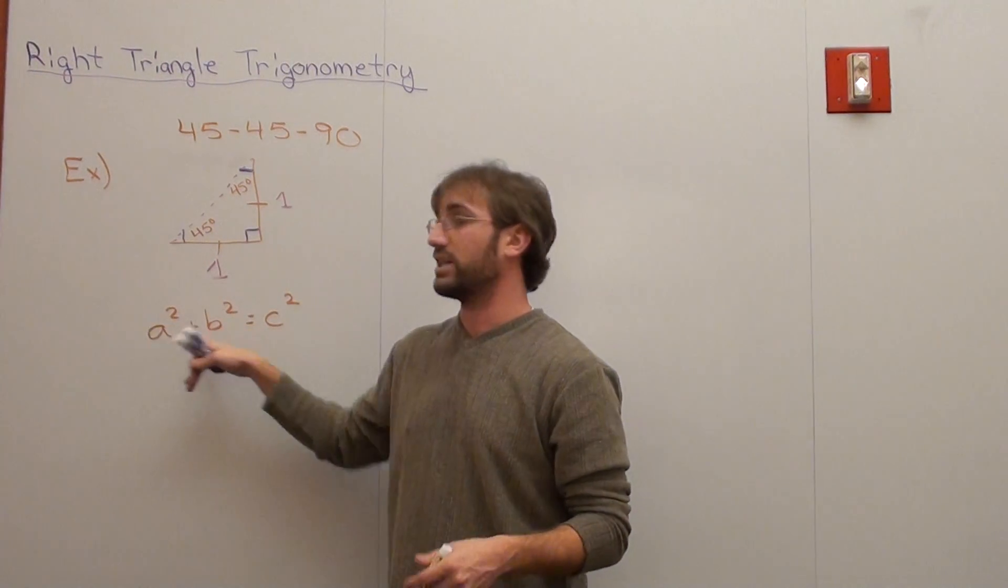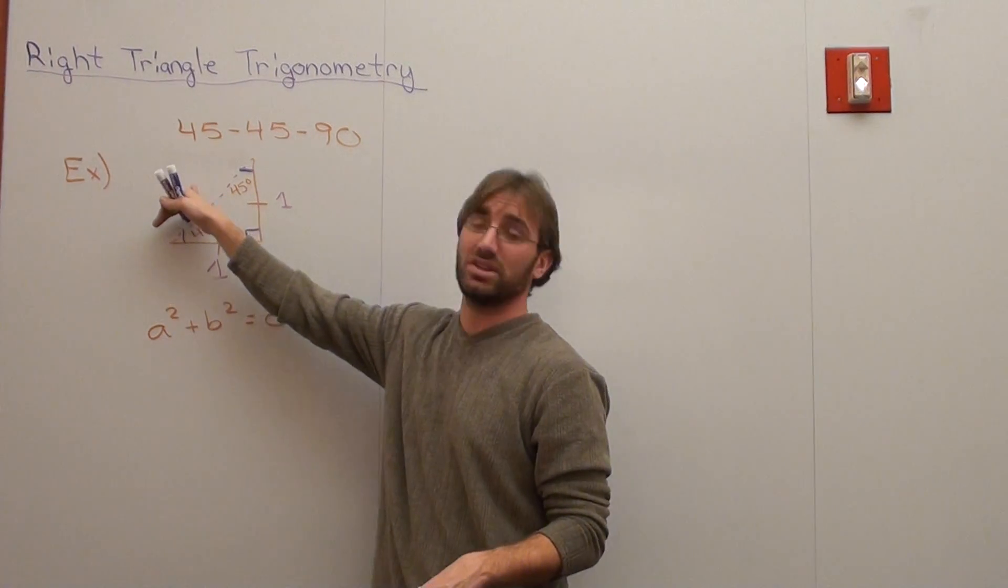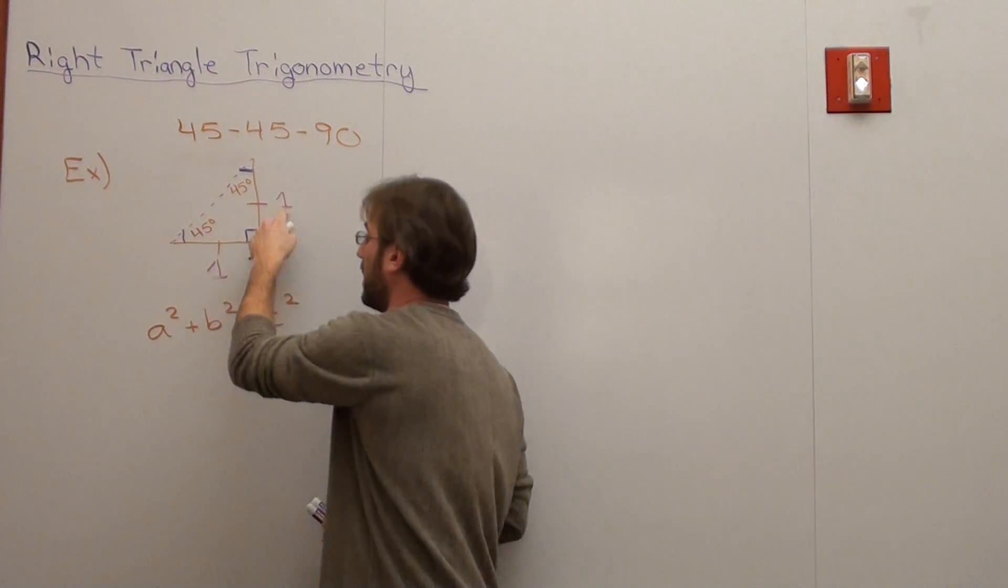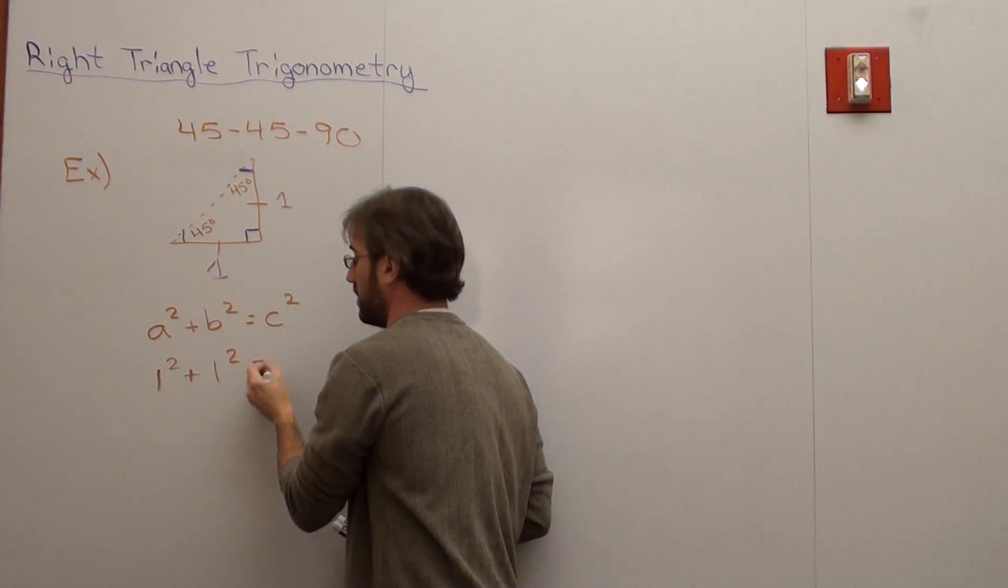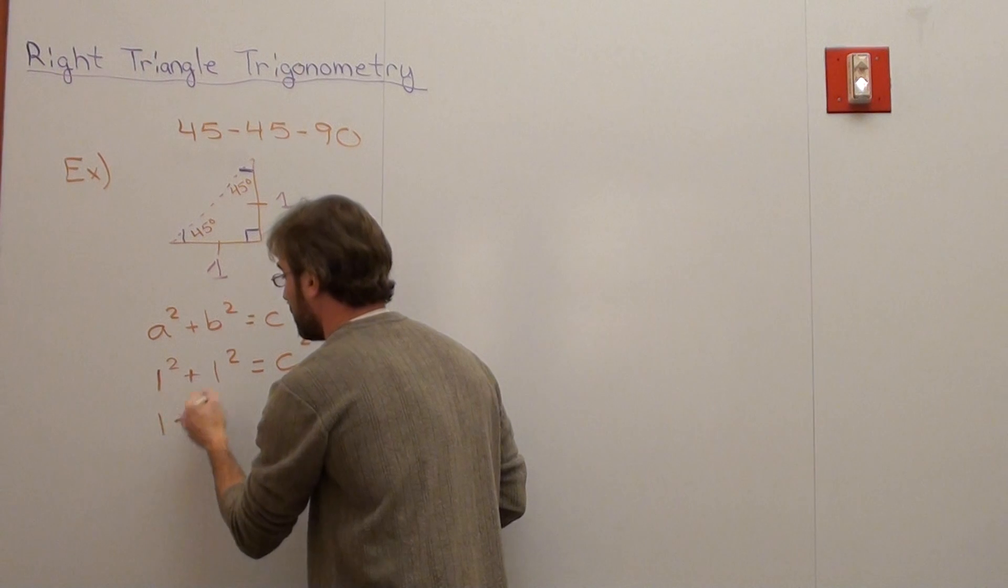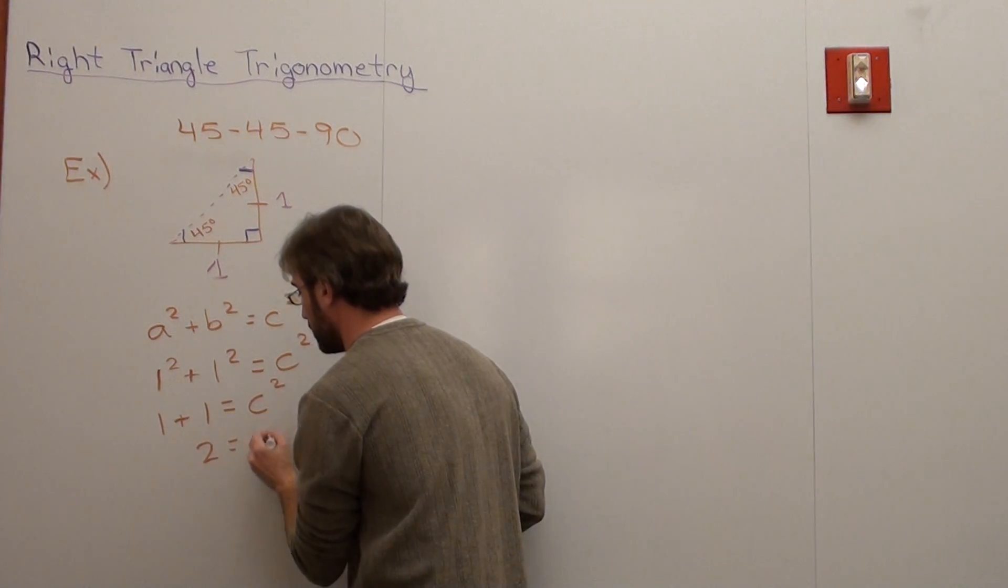So the two smaller sides are a and b, and it doesn't really matter which one you put in, but the c has to be the longest side. The side opposite the 90 degree problem. So we do that. 1 squared plus 1 squared equals c squared. 1 squared is 1 plus 1 squared is 1 equals c squared. So 2 equals c squared.